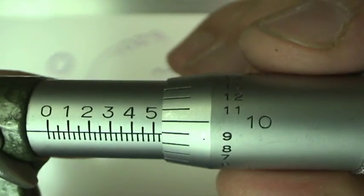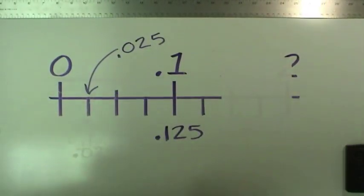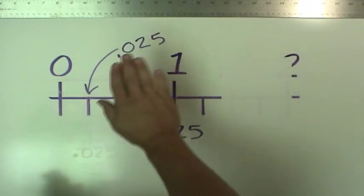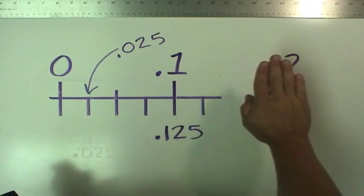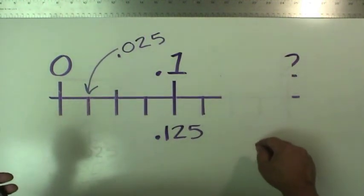So what we'll do is we'll count up to the last mark that's showing, and then we'll read on the scale how many thousandths to add to that. So we read up on the scale for however many of these are showing, and then we'll add to it what the thimble scale is showing.